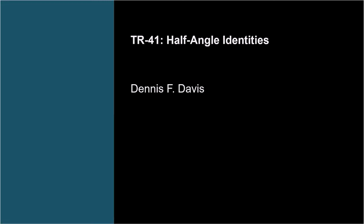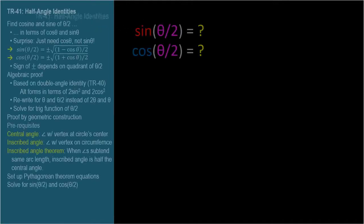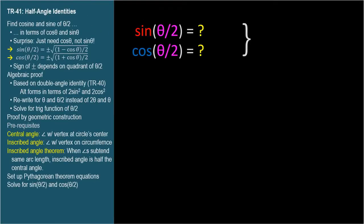The last identity we'll cover is the half-angle identity, where we'll express the cosine and sine of theta over 2 in terms of the cosine and sine of theta. We'll prove these identities both algebraically and geometrically.